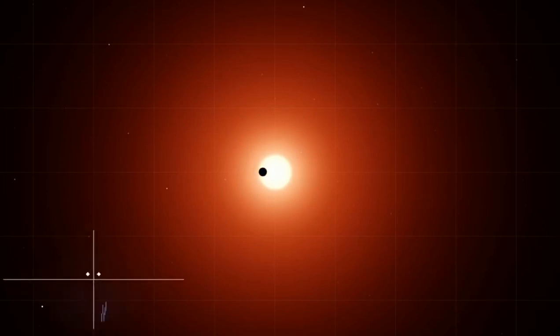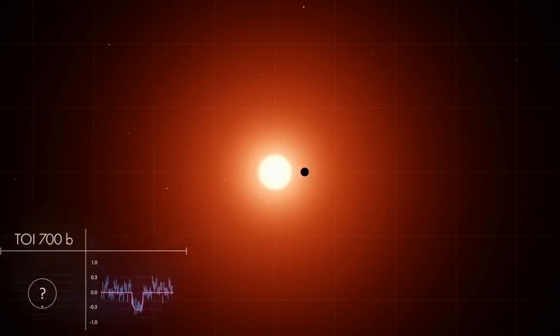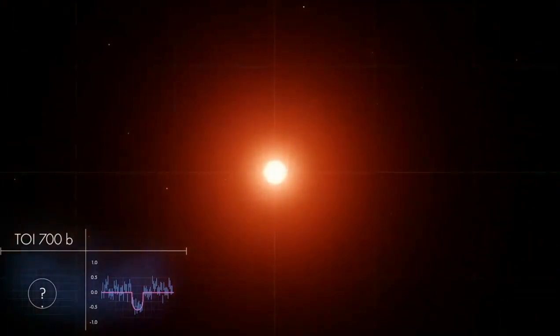One set of transits announced the presence of a planet close to the star, called TOI 700b. Another set revealed a second planet, named TOI 700c, a little farther out.